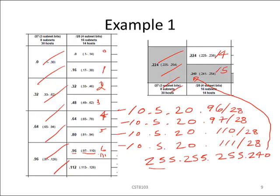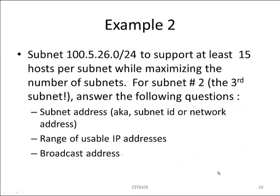Now let's move on to example number 2. The starting address is 10.5.26.0/24. Subnet this address to support at least 15 hosts per subnet while maximizing the number of subnets. For subnet number 2, which is the third subnet, answer the following: What is the subnet address? What is the range of usable IP addresses assignable to devices such as routers, switches, and access points? What is the broadcast address? And what is the subnet mask in dotted decimal?